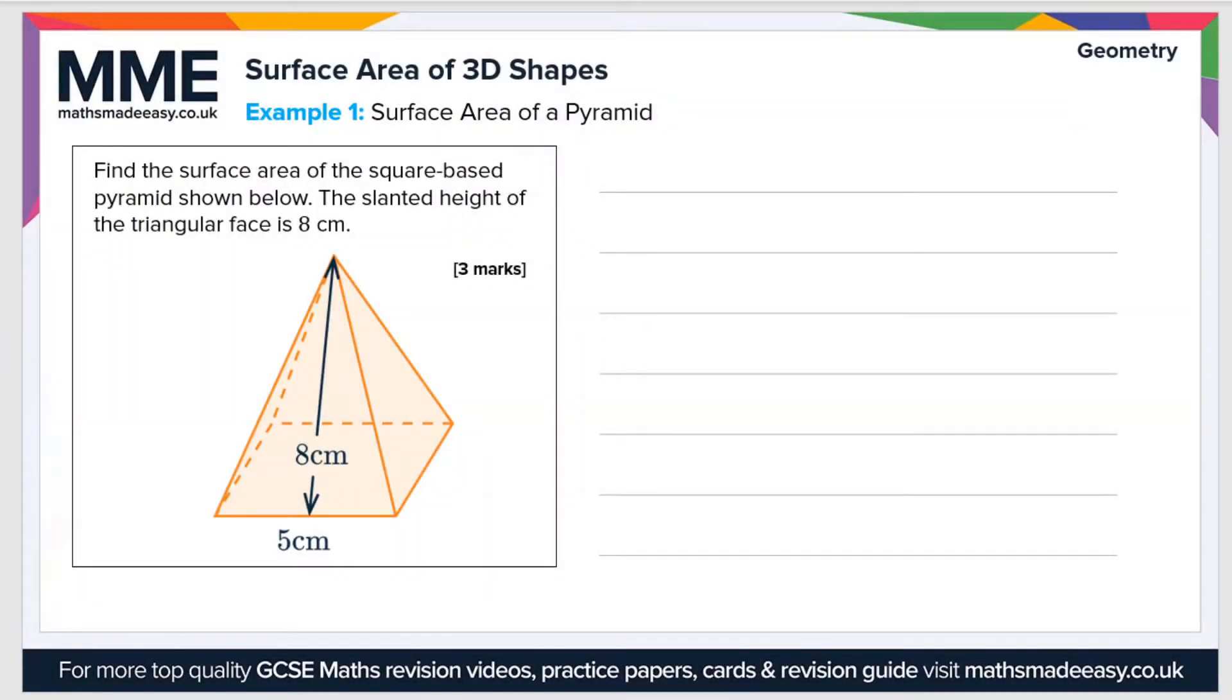So let's have a look at a couple of examples now. So example one, find the surface area of the square base pyramid shown below. The slanted height of the triangular face is eight centimeters. Well, it's a square base pyramid. So we can calculate the area of the square base by just doing area of the base equals five times five. Since that's the area of a square, that gives us 25 centimeters squared.